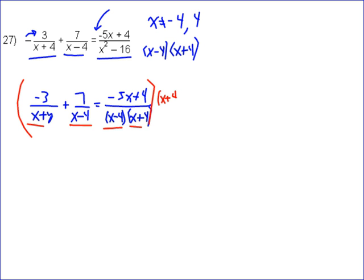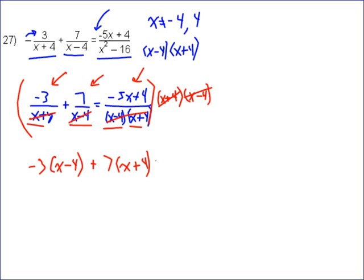When I multiply the first term by that, I'm going to cancel out the (x + 4)s, so that's going to leave me with -3 times (x - 4). When I look at this term, I'm canceling out the (x - 4), so it's going to leave me with 7 times (x + 4). And then when I look at this last term, it's going to cancel out both of them, so we're going to have just equals -5x + 4.